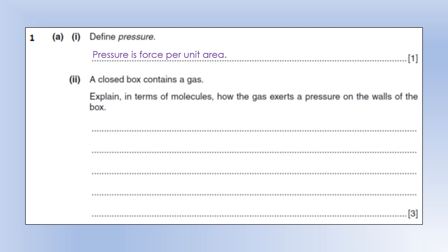So a closed box contains a gas. Explain in terms of the molecules how the gas exerts a pressure on the walls of the box. Okay, so the first thing is we're getting collisions. So the gas molecules are colliding with the wall of the container. Unless there's a collision happening, there is no force or pressure on the container.